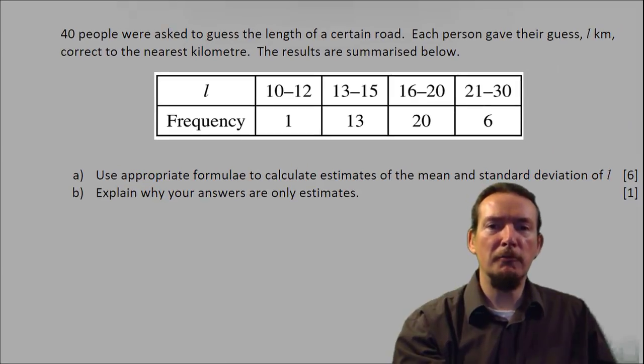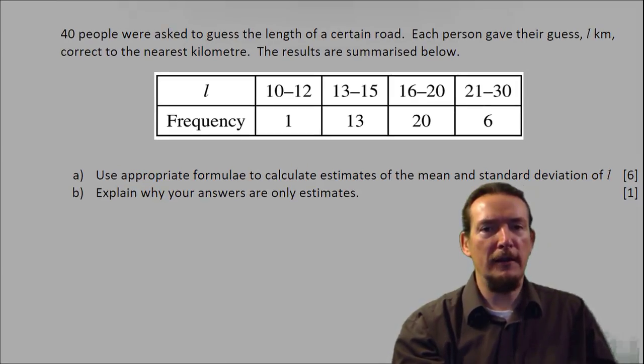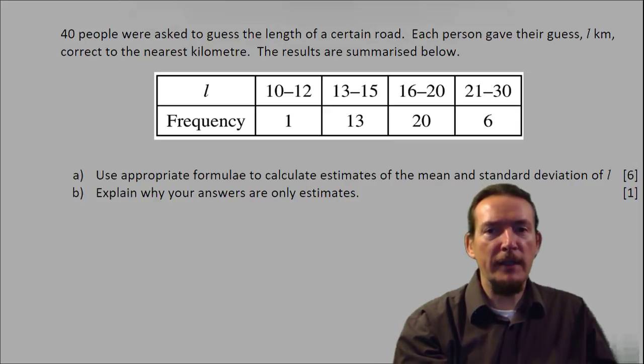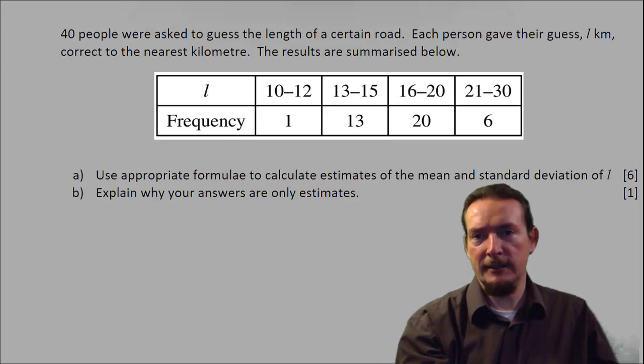This question is based on a group frequency table containing the guesses of 40 people on the length of a road. We need to find the mean and standard deviation of these guesses, which is no problem at all for the ClassWiz.